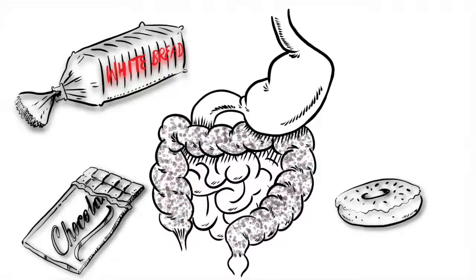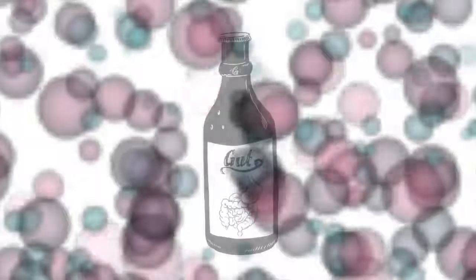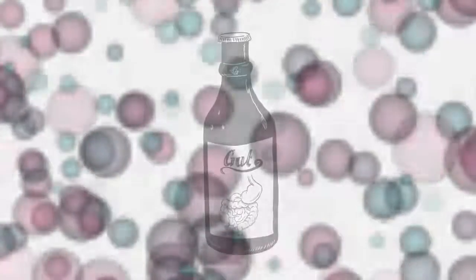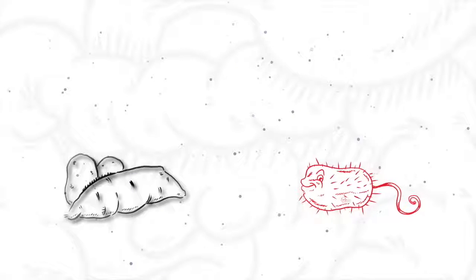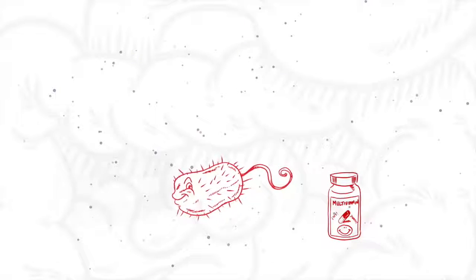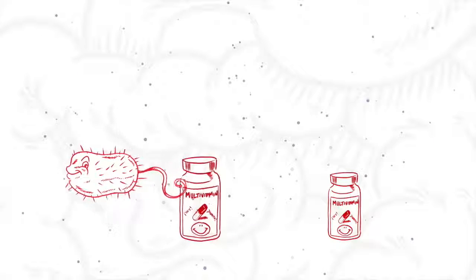But complex carbohydrates can't be digested in the small intestine and make their way into the colon, where bacteria breaks them down through fermentation, enabling us to use nutrients we couldn't otherwise. And the microbiota provides essential vitamins that we can't make ourselves, such as B vitamins.